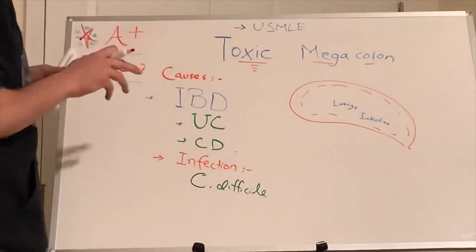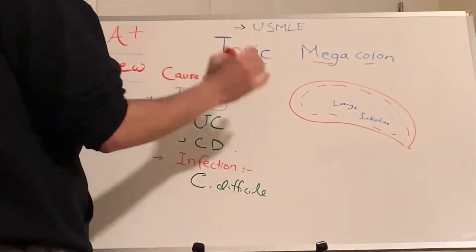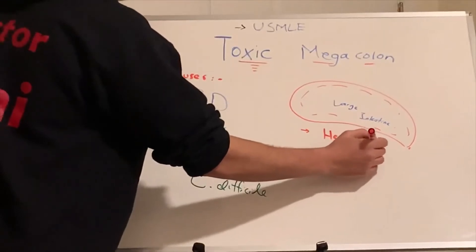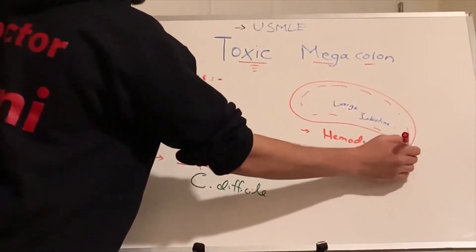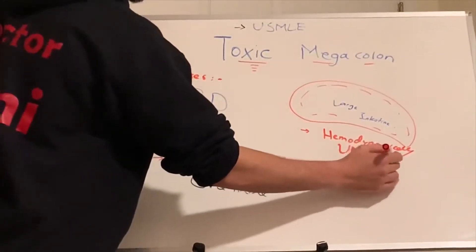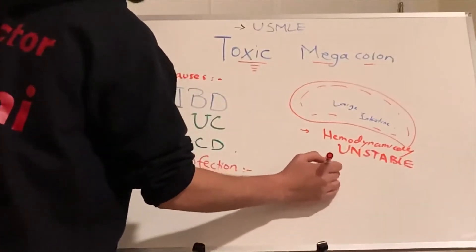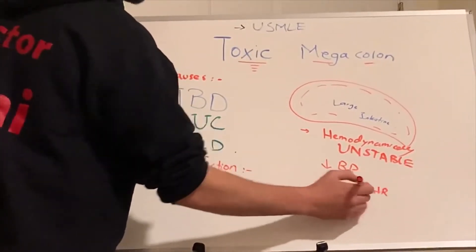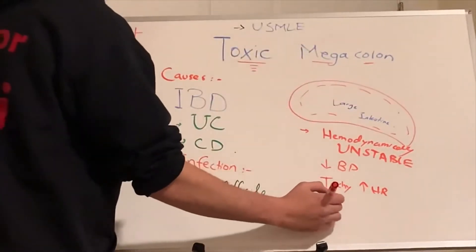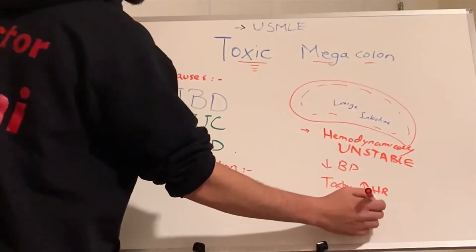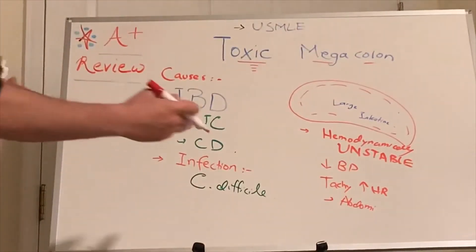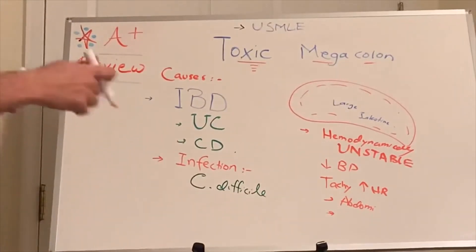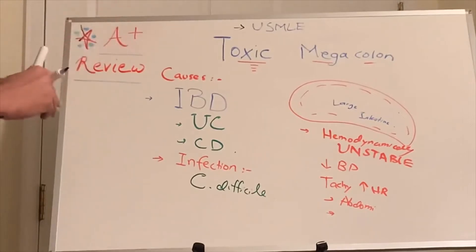What we need to know for exam questions: it is a toxic picture, so the patient will be hemodynamically unstable. Blood pressure is low, heart rate is high (tachycardia). The patient will have abdominal distension, abdominal pain, and diarrhea — which can be painful and bloody.